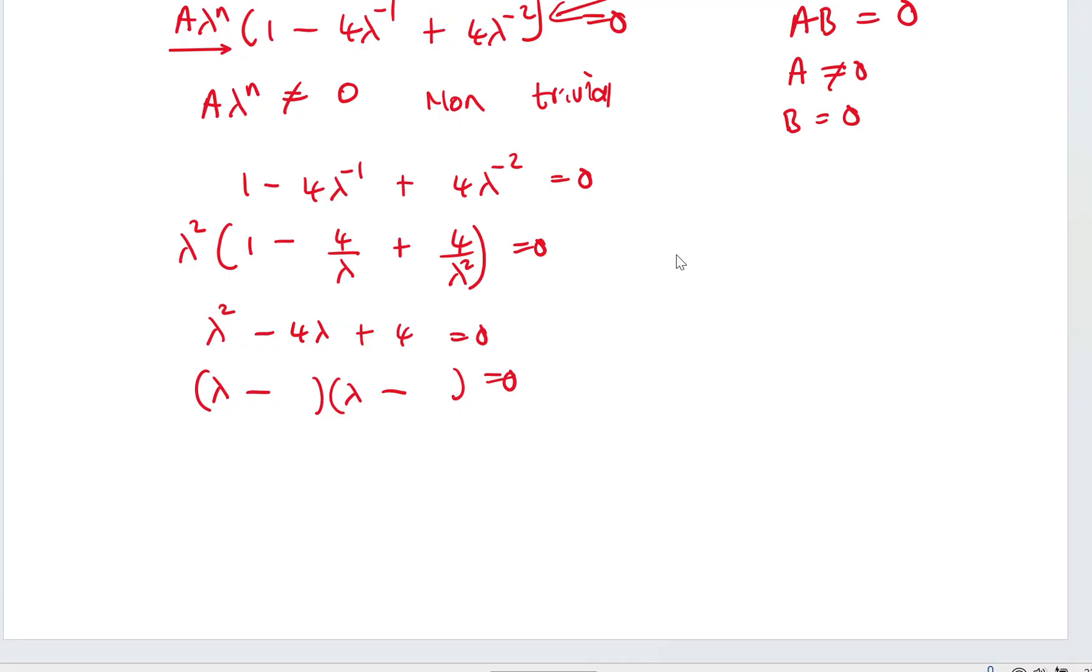Two factors of 4 that when you add them, they give you 4. When you multiply them, they give you 4 again. It's 2 and 2. Because 2 plus 2 is 4, and 2 times 2 is 4. So I'll put 2 this side and 2 this side. Well, lambda 1 is equal to 2 or lambda 2 is equal to 2.